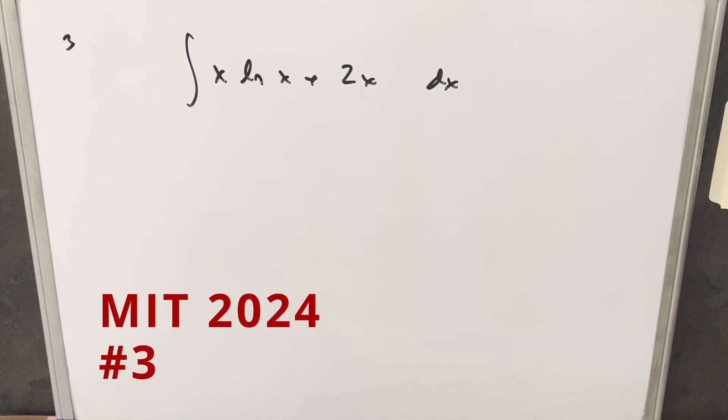Okay, we have to retain another integral from the MIT integration B2024. This was problem three. We have the integral of x lnx plus 2x dx.